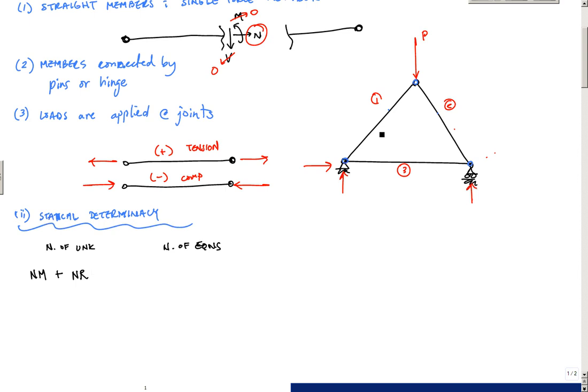Within a truss, because I have hinge connections here and I can't transfer moments, and you really can't calculate a moment at a joint anyway. So here I have one, two, three joints. I have two equations, two equilibrium equations at each joint. Two times the number of joints.